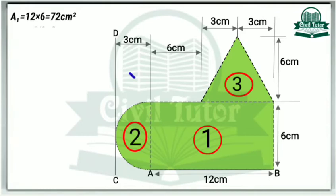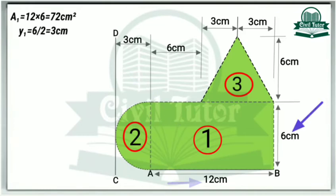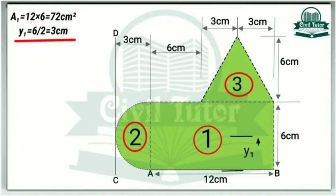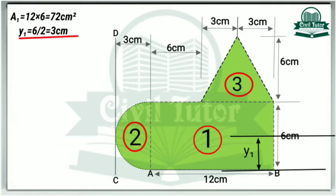A1 is the area of this rectangle which is equal to 12 centimeter into 6 centimeter, equal to 72 centimeter square. Let Y1 be the centroidal distance of this rectangle from the bottom line AB. As we know the rectangle has a centroid of D by 2, so Y1 will be equal to 6 divided by 2, equal to 3 centimeter.